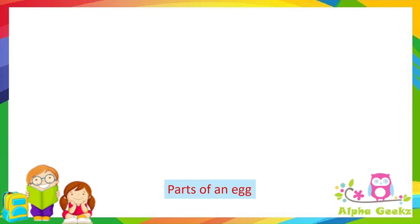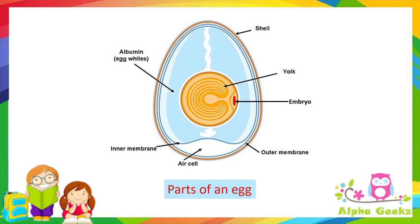Let's look at the parts of an egg. An egg of a hen is oval in shape and has a thin protective shell called the eggshell. An air space is present at the broad end of the egg, and it grows larger as the egg ages. An egg has a white jelly-like substance inside called albumin, which protects the embryo. The yellow inner part of the egg is called the yolk.